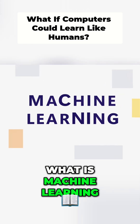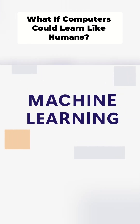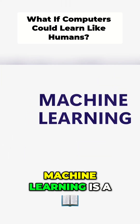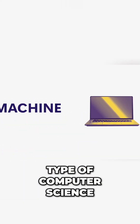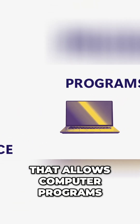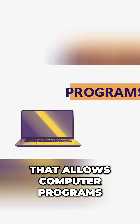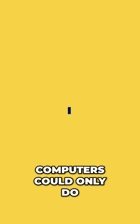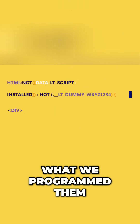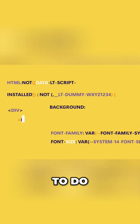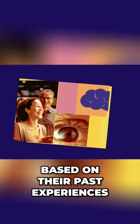What is machine learning? Machine learning is a type of computer science that allows computer programs to learn and improve all on their own. In the past, computers could only do what we programmed them to do, but with machine learning they can behave like humans and gain knowledge based on their past experiences.